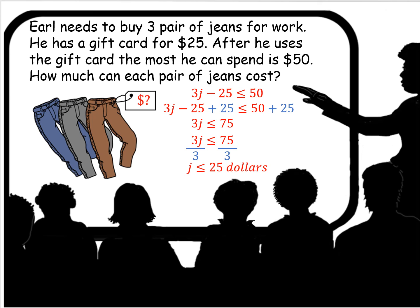So once again, to isolate the variable, we're going to add 25 to both sides. When we do that, we get 3j is less than or equal to 75. We then divide both sides by 3, and we find that the jeans can cost less than or equal to $25.